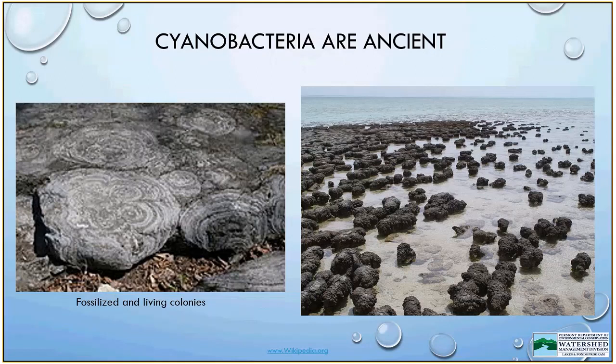Cyanobacteria are ancient. They are known as fossils — you can see a fossilized stromatolite shown in the image on the left. These organisms are millions of years old and were initially believed to be some sort of geological phenomenon until someone found living stromatolites in Australia, shown in the image on the right. Those rocks you see are actually living cyanobacteria colonies. They've changed very little since the fossils were formed millions of years ago and remain highly successful.